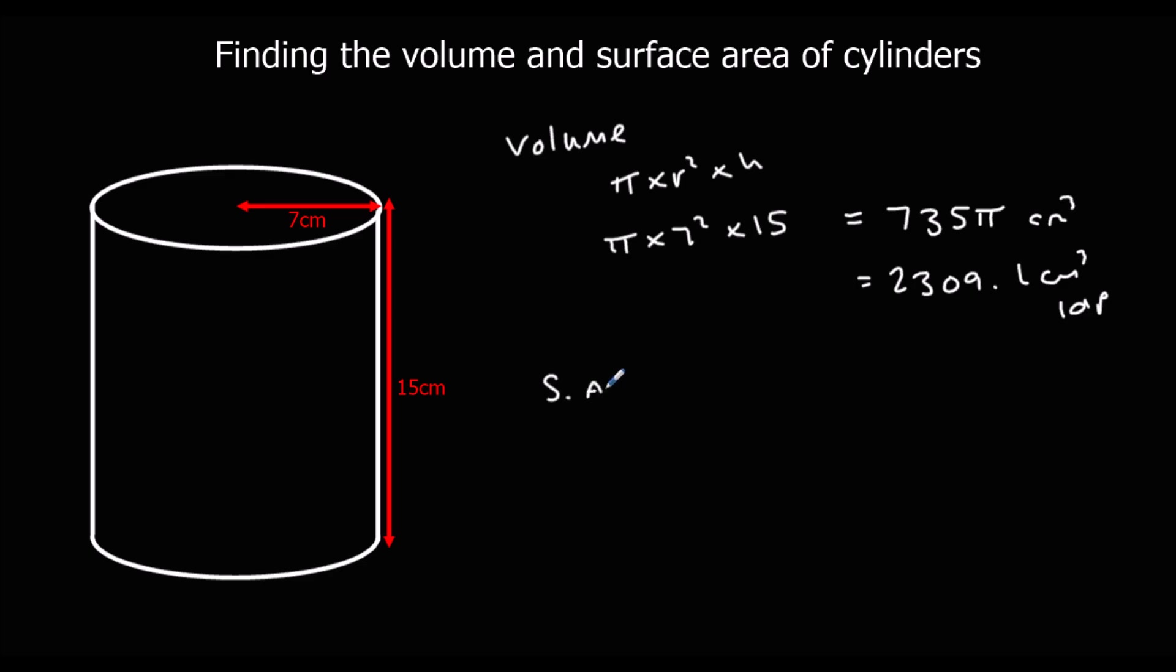Surface area. We've got two circles. Circle number one, pi times r squared, which is pi times 7 squared, which is 49 pi. The other circle also 49 pi. And then we've got our rectangle which is pi times diameter for the length, 14, times 15. That gives us 210 pi.